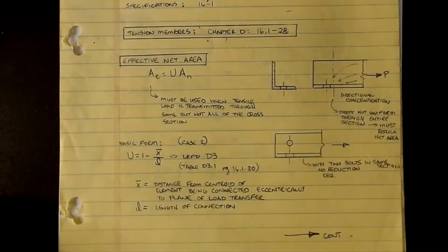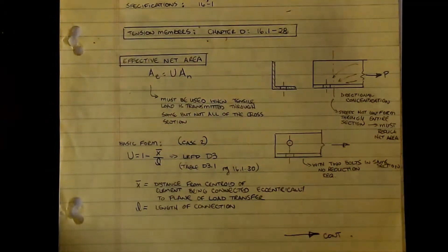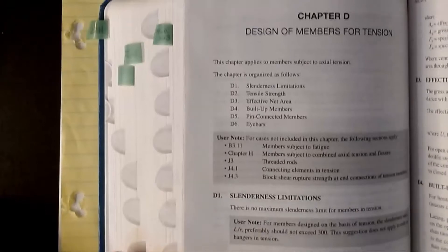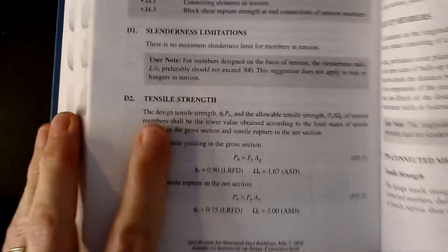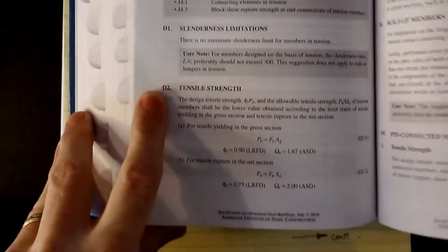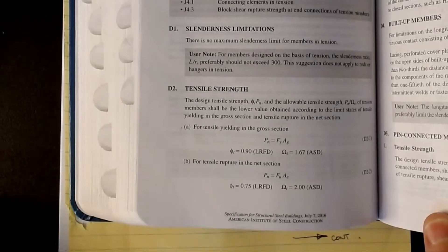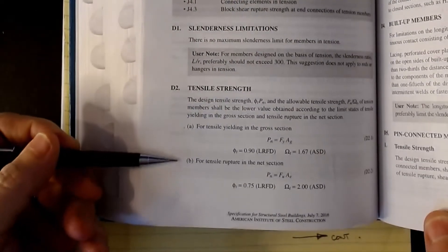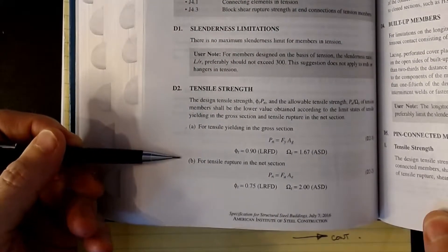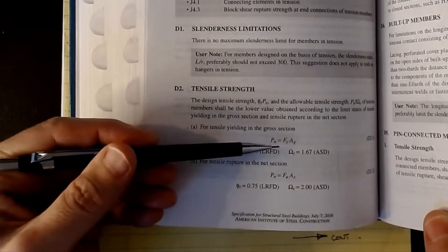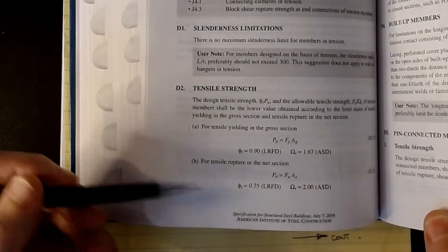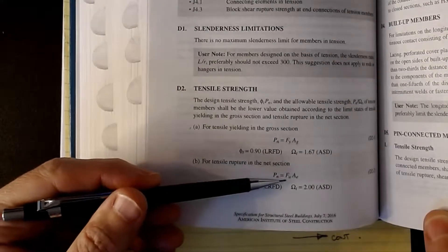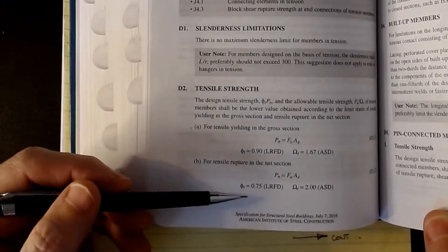When we were talking about tension members and in particular the net fracture calculation, we were in Chapter D of the specification, on page 16.1-28. The equation we're most interested in is equation B in D.2, for tensile rupture. For gross yielding, nominal strength was yield stress times gross area with φ of 0.9, and for net fracture it was nominal strength equals Fu times AE, multiplied by 0.75.